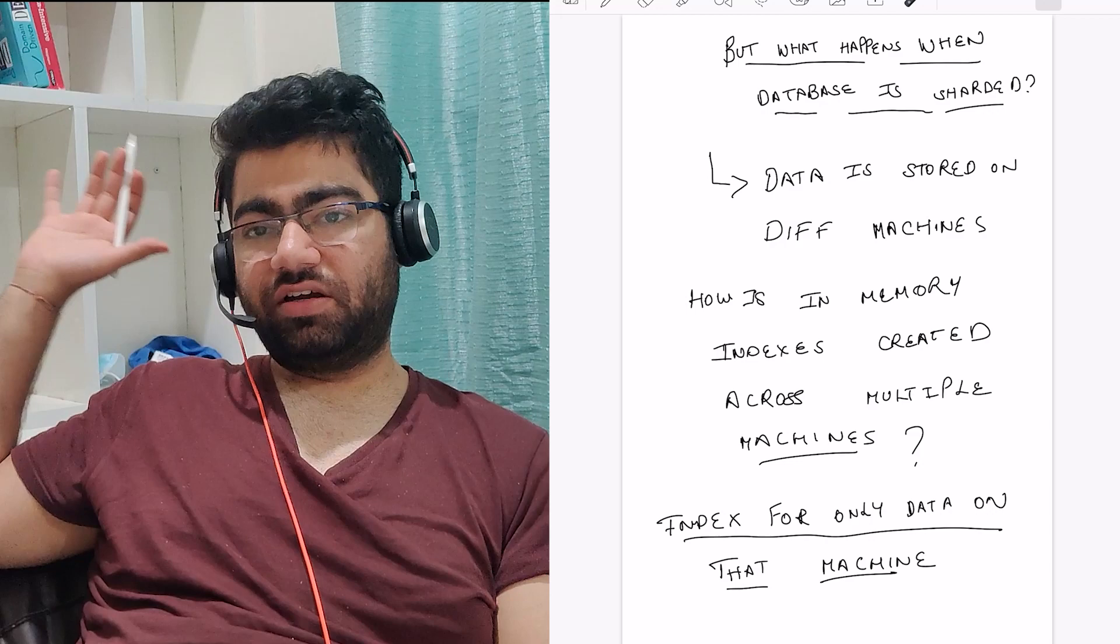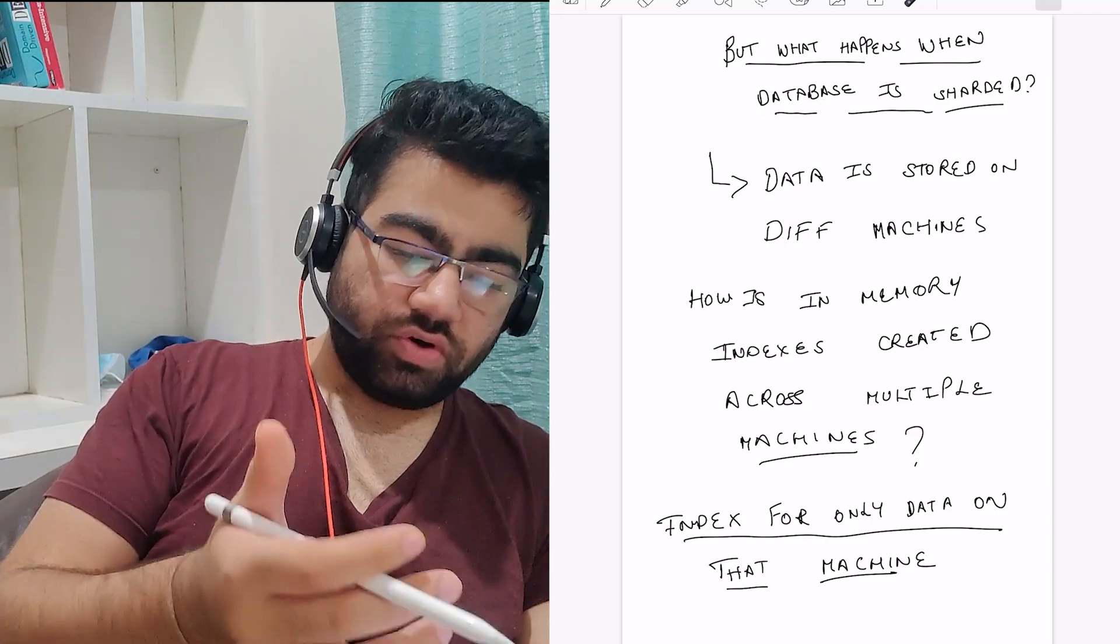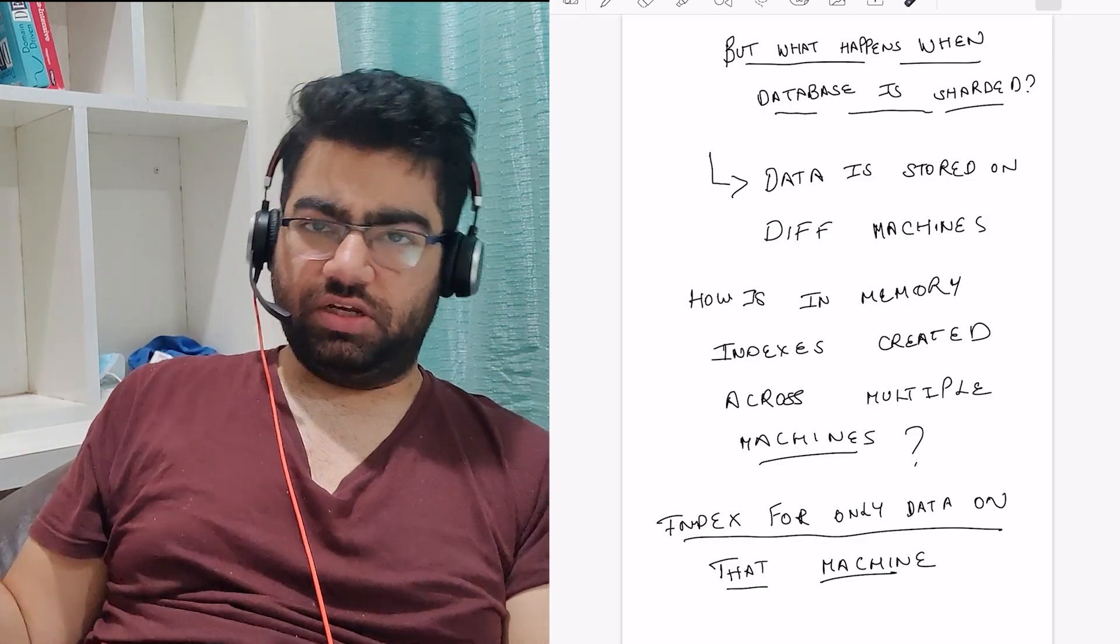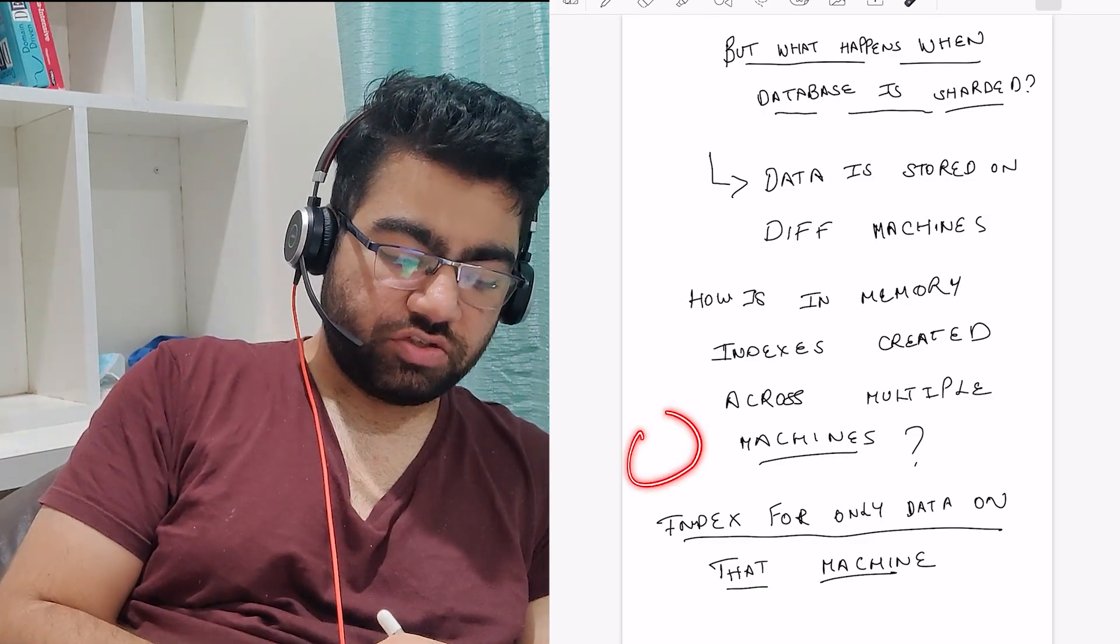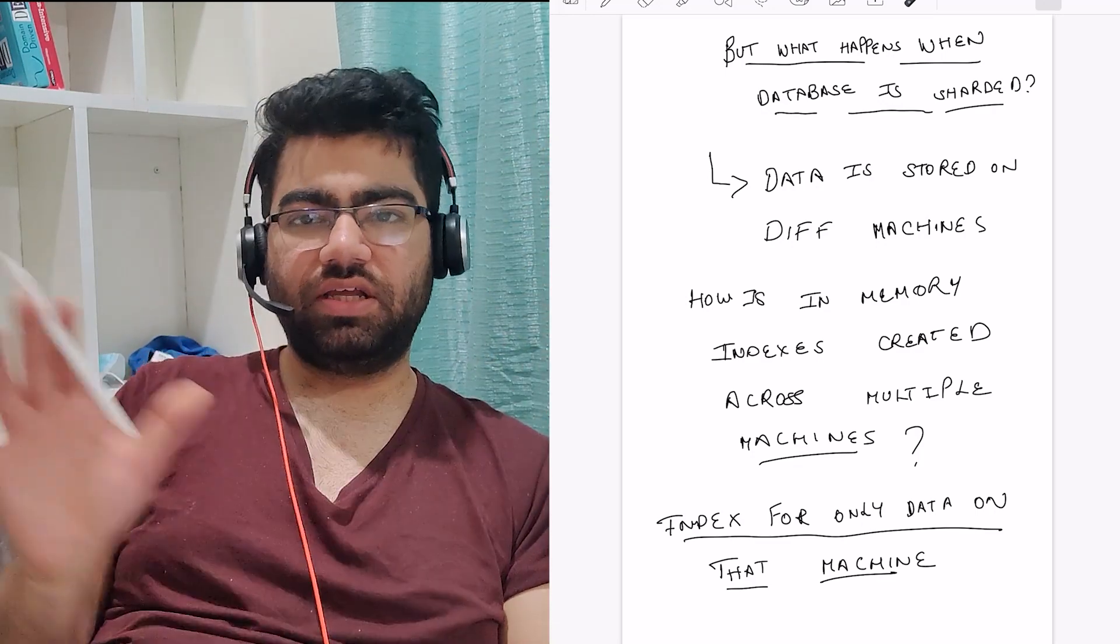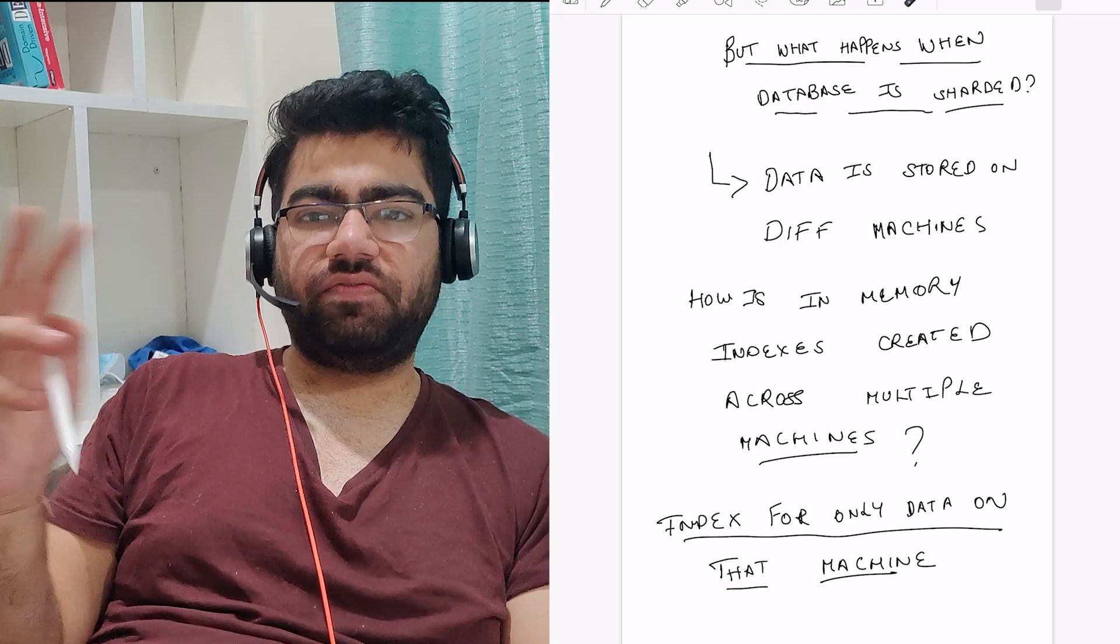Now how would you create an index on the data which is stored on different machines? For that, you would simply create an index for each of the machines. There would be a B+ tree for each machine and indexing would be there on that particular column for that machine - a separate tree.